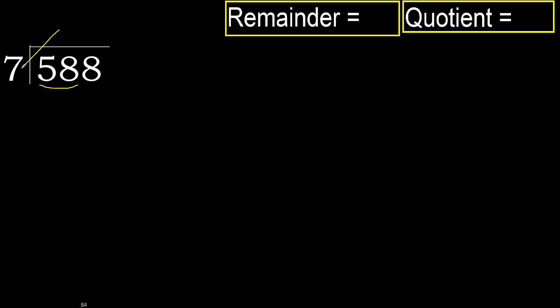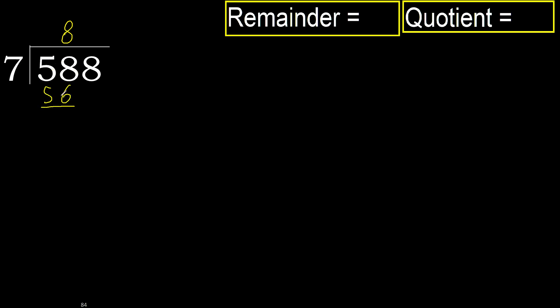7 multiplied by 9 is 63, which is greater. Multiplied by 8 gives 56, which is not greater. Okay. Subtract: 58 minus 56 equals 2.